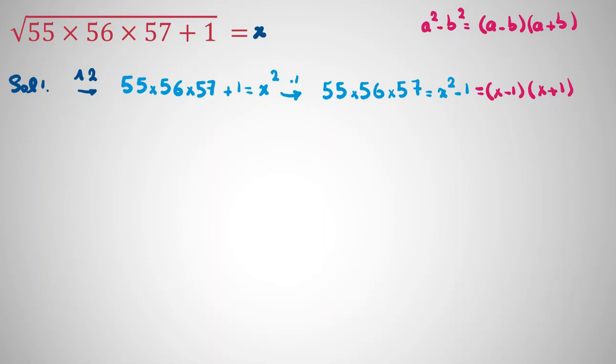Let's factorize. 55 is 5 times 11 times 56 is 2 times 2 times 2, 8 times 7, and 57 is 3 times 19, equal to x minus 1 times x plus 1.